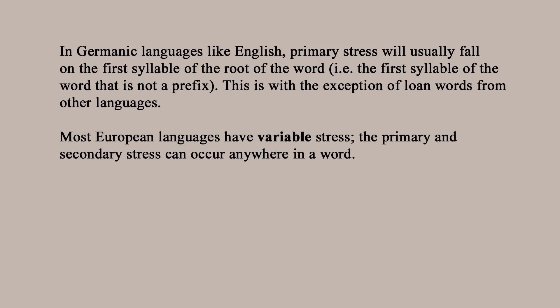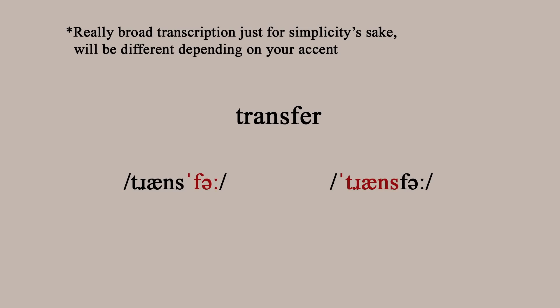I'll give you an example of a loan word borrowed into English from Latin. This sequence of phonemes can be pronounced in two different ways: it can be 'transfer' or it can be 'transfer'. The first one is a verb — 'I'll transfer you the details' — and the second one is a noun — 'the transfer of the details'. So you can see that variable stress allows you to get several different words out of one string of phonemes.